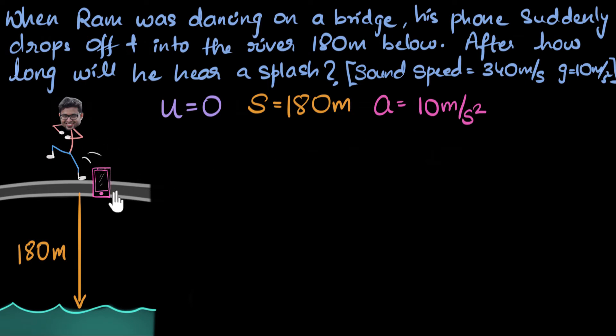But for instance, if Ram had thrown his phone up for some reason, then as it goes up, its speed would decrease. It would slow down and fall back. That time during the upward motion, we would say acceleration is negative. So for our downward motion, acceleration is positive. And we need to calculate time. So we need an equation that connects these four quantities.